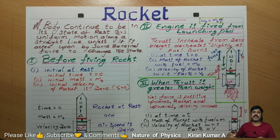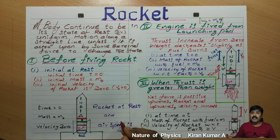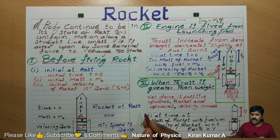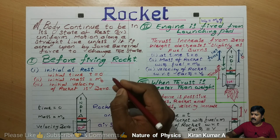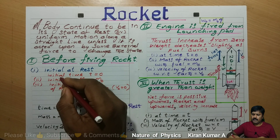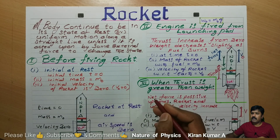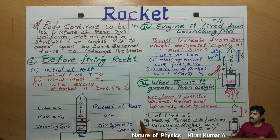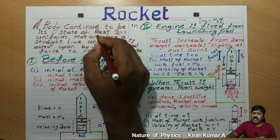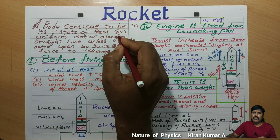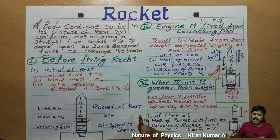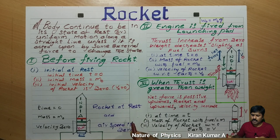Hi, I am Kiran Kumar from Nature of Physics. Today's topic is rocket — a most important concept I will explain clearly, step by step. I have already written all the cases. According to Newton's First Law, a body continues to be at rest or in uniform motion unless acted upon by a net external force.